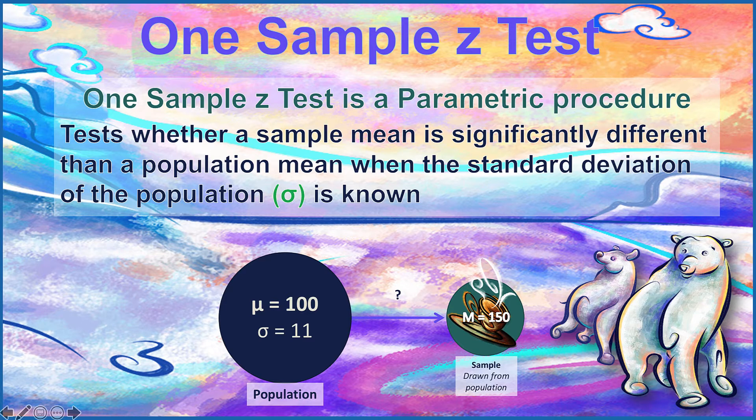In this example, I have a population with a mean of 100 and a standard deviation of 11, and I want to test whether my mean of 150 — a sample that has been drawn from that population — is different than the mean of 100.